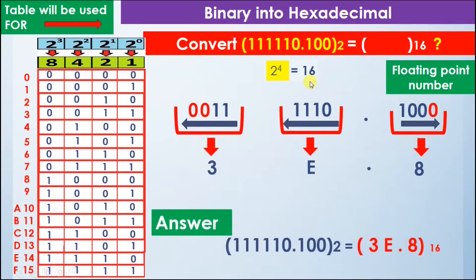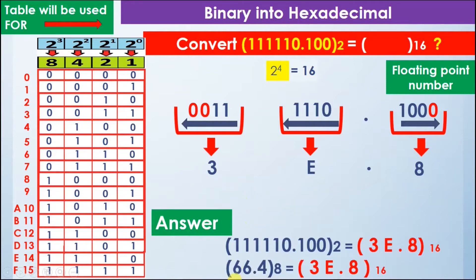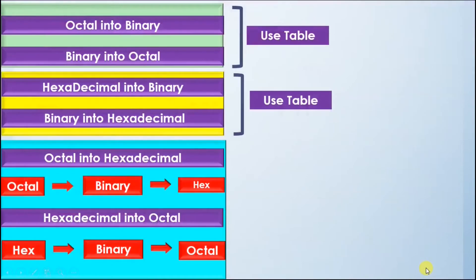Combining all values together, the answer is 3 E dot 8 in hexadecimal. So the number 1 1 1 1 1 1 0 dot 1 0 0 in binary is equal to 3 E dot 8 in hexadecimal. This is the final part of the conversion: 66.4 in octal equals 3 E dot 8 in hexadecimal. We converted in two parts — first octal to binary, then binary to hexadecimal. In the next section we will see how to convert hexadecimal into octal.